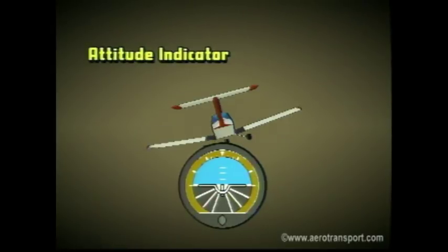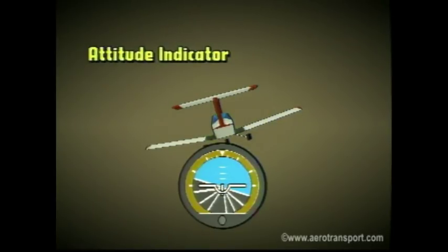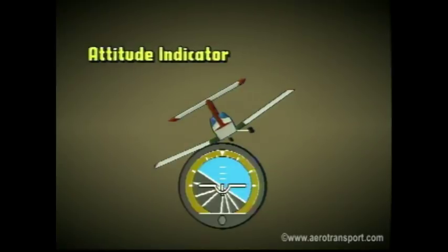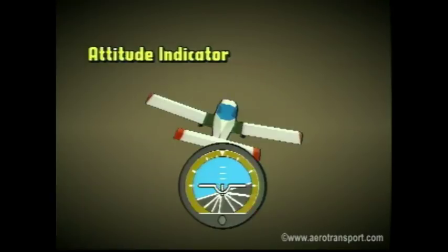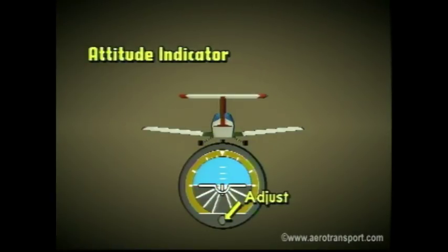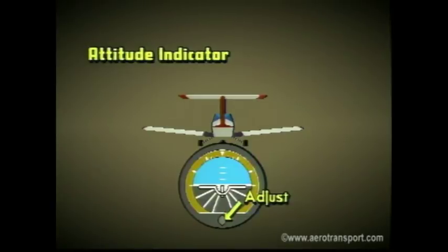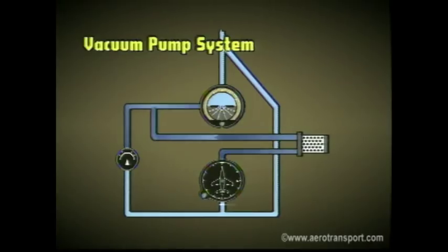Bank is indicated by the scale at the top of the instrument. When you bank the aircraft, the miniature plane on the instrument banks, and the pointer indicates the degree of bank on the index scale. The miniature airplane can be adjusted to match the horizon bar should it be necessary to fly slightly nose-up or nose-down because of altitude, power, or load. If the attitude indicator on your aircraft is vacuum-driven, make sure it is running for 5 minutes to build enough vacuum.